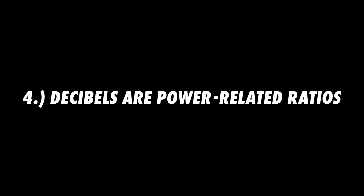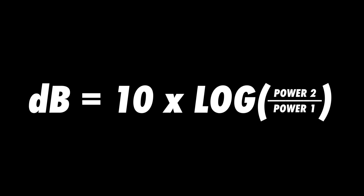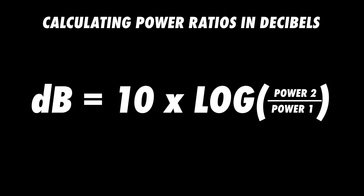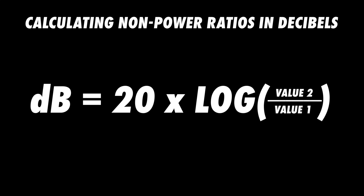Hopefully you're beginning to see that the decibel isn't as confusing as it once seemed. For many, the most confusing aspect of using the decibel is deciding which formula to use in a given situation. The formula for decibels is 10 times the log of Power 2 over Power 1. In some situations, however, you might see this formula: 20 times the log of Value 2 over Value 1. The decibel is always a power-related ratio. When calculating electrical or acoustical power levels, we use the basic decibel formula: 10 times the log of Power 2 over Power 1. The decibel can also be used to represent changes of non-power quantities. When calculating voltage and sound pressure levels, for example, we use this formula: 20 times the log of Value 2 over Value 1.